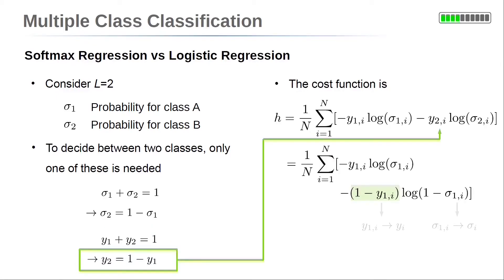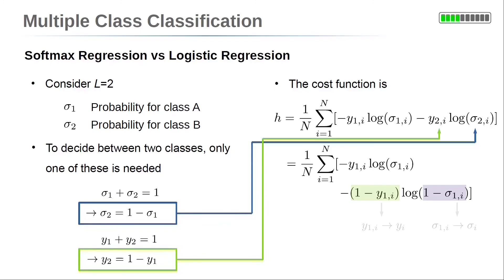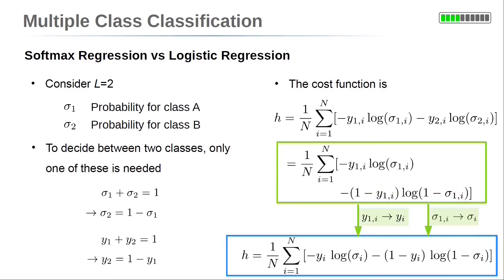Using the relations between y_1 and y_2, as well as σ_1 and σ_2, the cost function becomes similar to the logistic regression cost function. In the resulting expression, we can substitute y_1 by y and σ_1 by σ to get the same cost function.